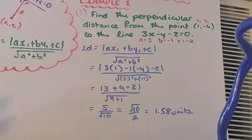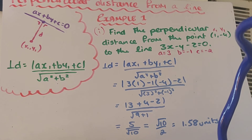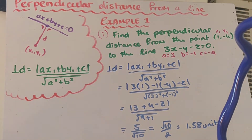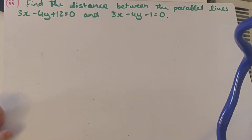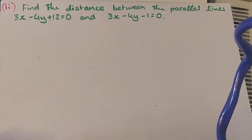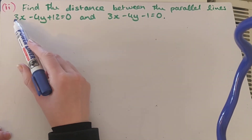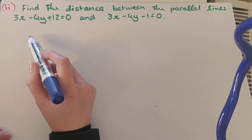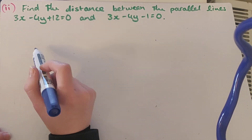So take a minute, go back through that example, make sure we understand everything in example 1 part 1, and then we're going to look at example 1 part 2. Pause the video here and add in any notes needed. Now looking at example 1 part 2. It says find the distance between the parallel lines 3x minus 4y plus 12 equals 0 and 3x minus 4y minus 1 equals 0.